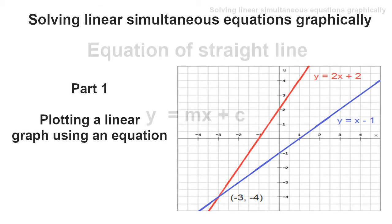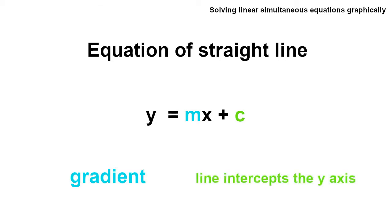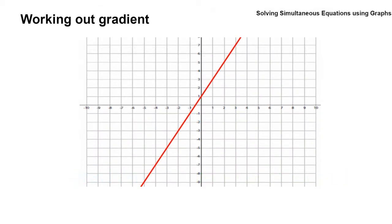The first thing we need to know is the equation of a straight line: y equals mx plus c. The m represents the gradient or the slope of the line, and the c represents the point at which the line intercepts the y-axis. So let's look at working out the gradient or slope of a line.